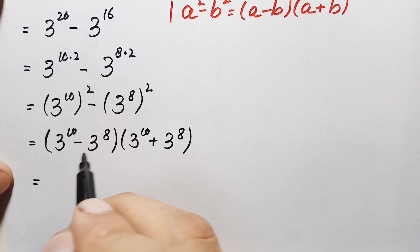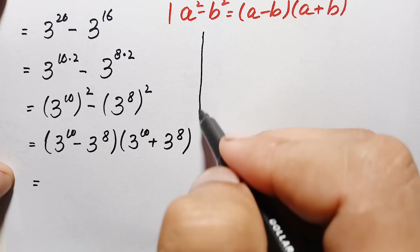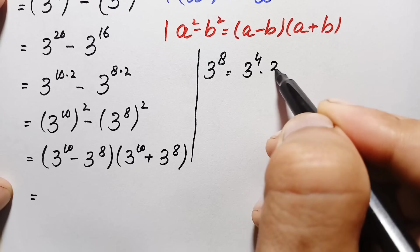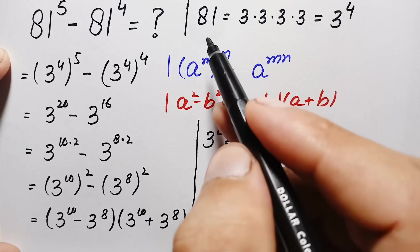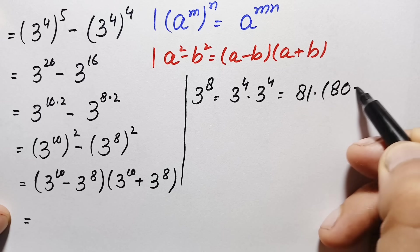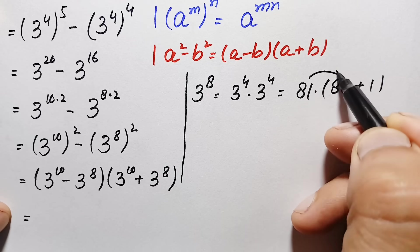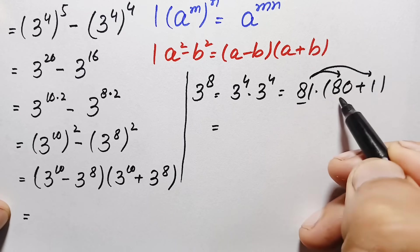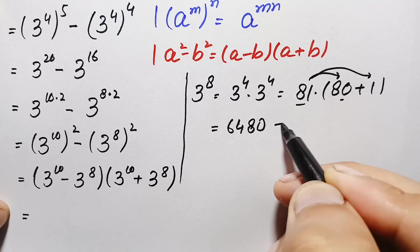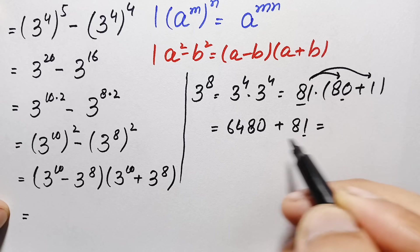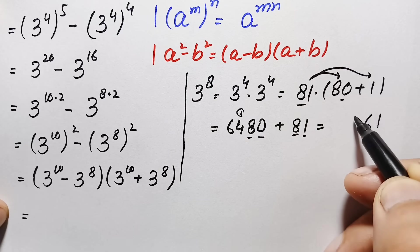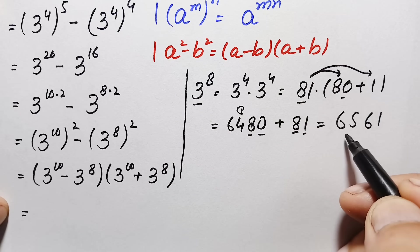Our next step is to find the value of 3 to the power 8 and 3 to the power 10. For 3 to the power 8: we write it as 3 to the power 4 times 3 to the power 4. Since 3 to the power 4 is 81, this is 81 times 81. Writing 81 as 80 plus 1: 81 times 80 gives 6480, plus 81 times 1 is 81. Adding: 6480 plus 81 gives 6561. So 3 to the power 8 is 6561.